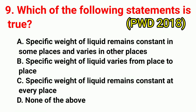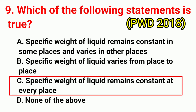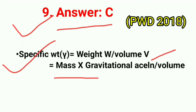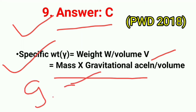Question No. 9. Which of the following statement is true? Correct answer is option C: specific weight of liquid remains constant at every place. Specific weight = weight / volume = mass × gravitational acceleration / volume. Multiplying density by acceleration of gravity (9.81) gives specific weight.